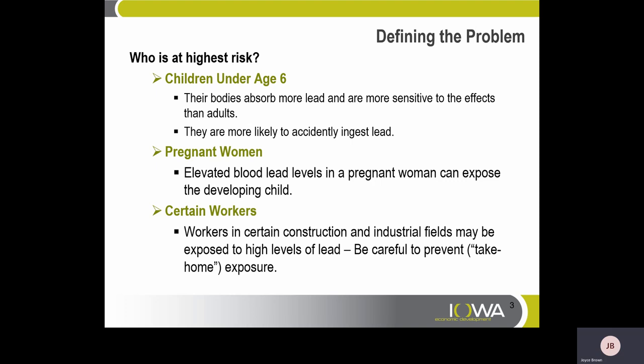Defining the Problem – Who's at Highest Risk? Children under age 6 – their bodies absorb more lead and are more sensitive to the effects than adults. They are more likely to accidentally ingest lead. Pregnant women – elevated blood lead levels in a pregnant woman can expose the developing child. Certain workers in construction and industrial fields may be exposed to high levels of lead.